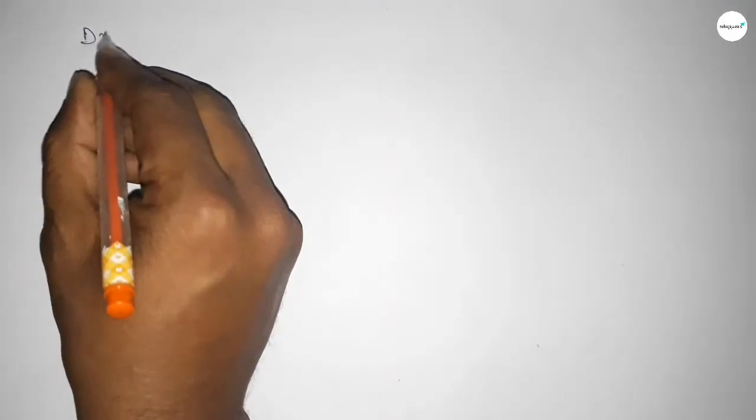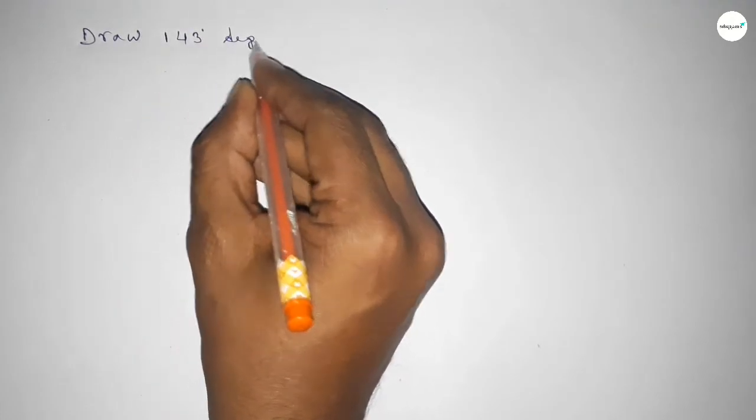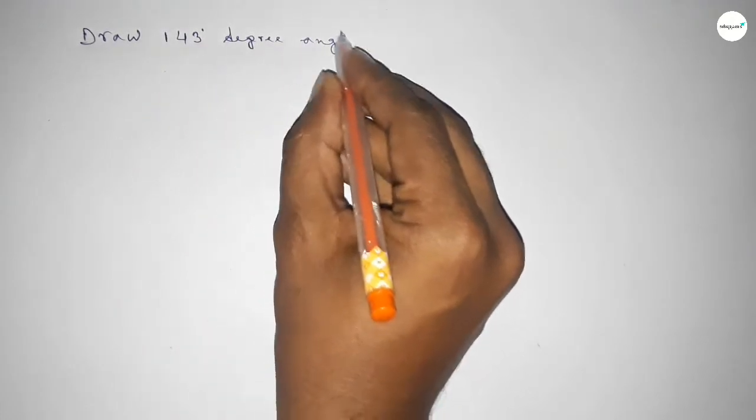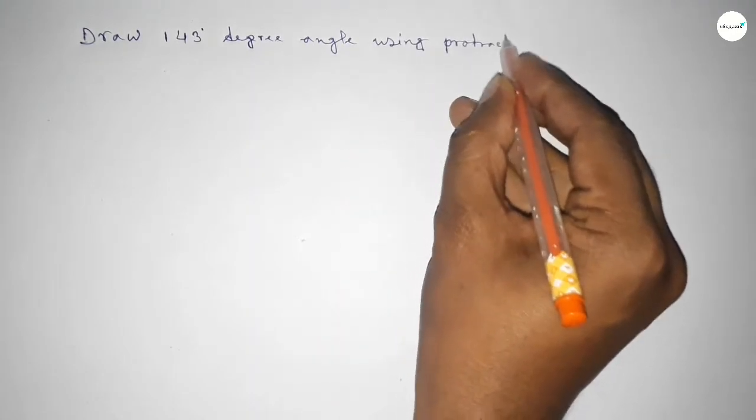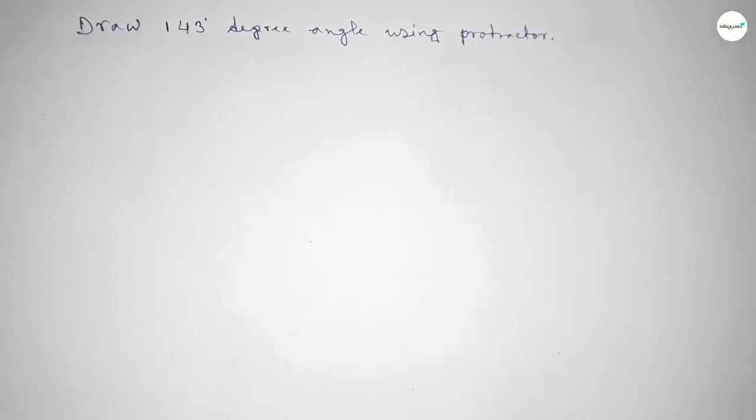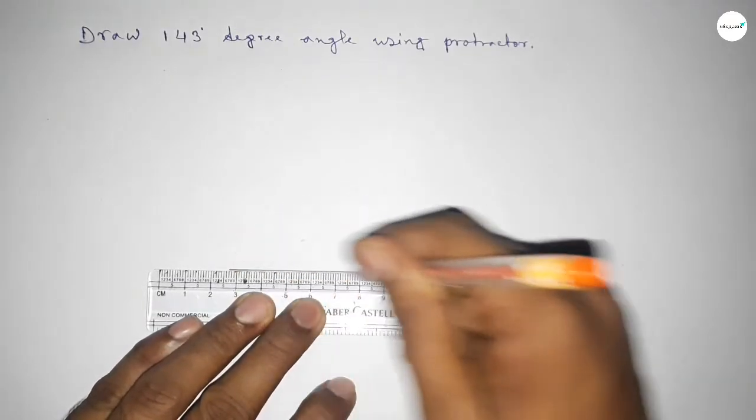Hi everyone, welcome to SI Share Classes. Today in this video we have to draw a 143 degree angle by using a protractor. So let's start the video. First of all, we have to draw here a straight line of any length.